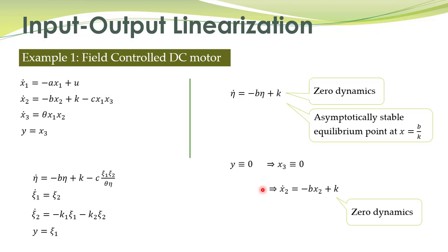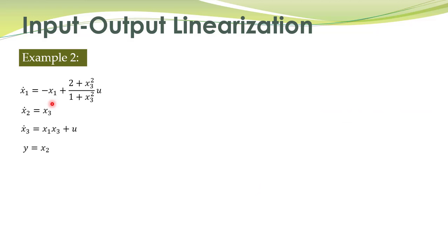We can study the stability of zero dynamics without actually obtaining the normal form of the system. This saves effort: if zero dynamics are unstable, we need not perform input-output linearization at all, since it would not be useful.